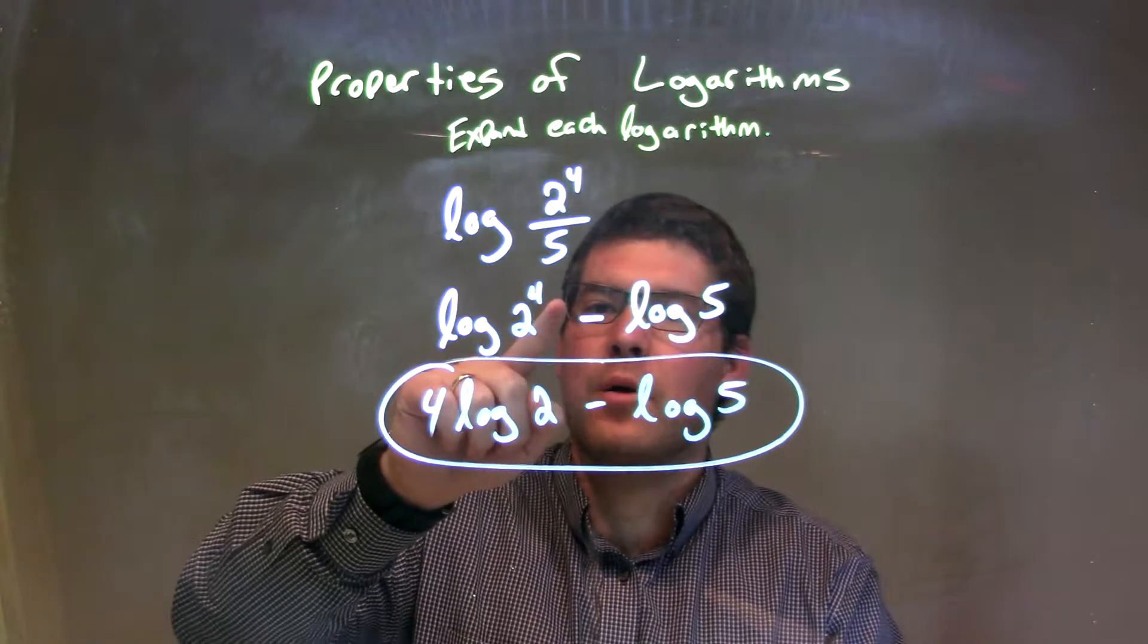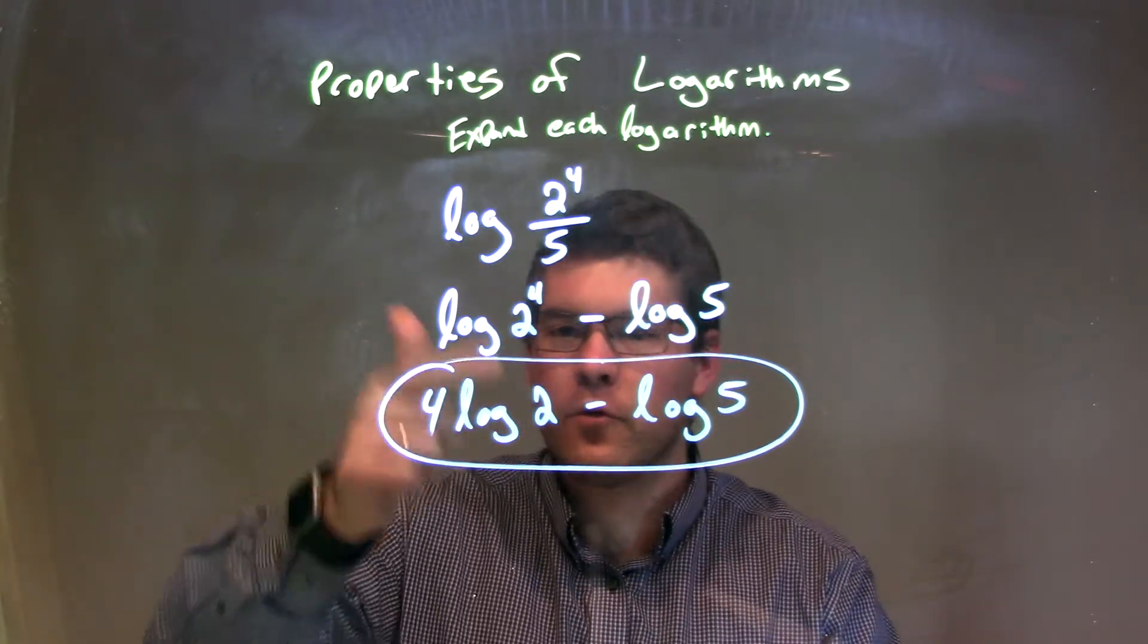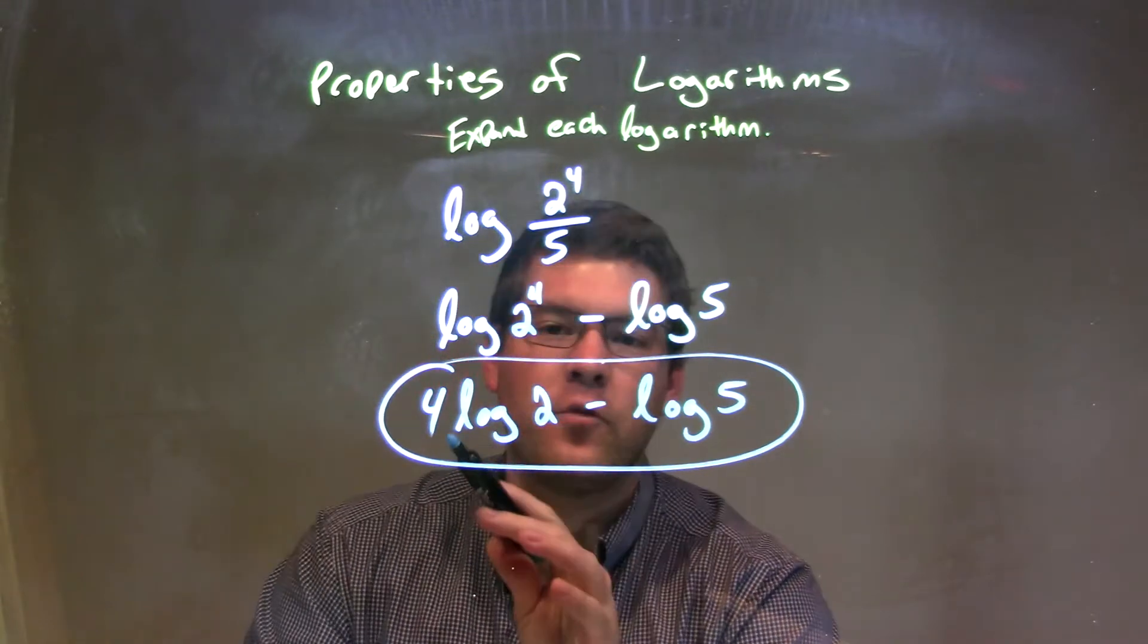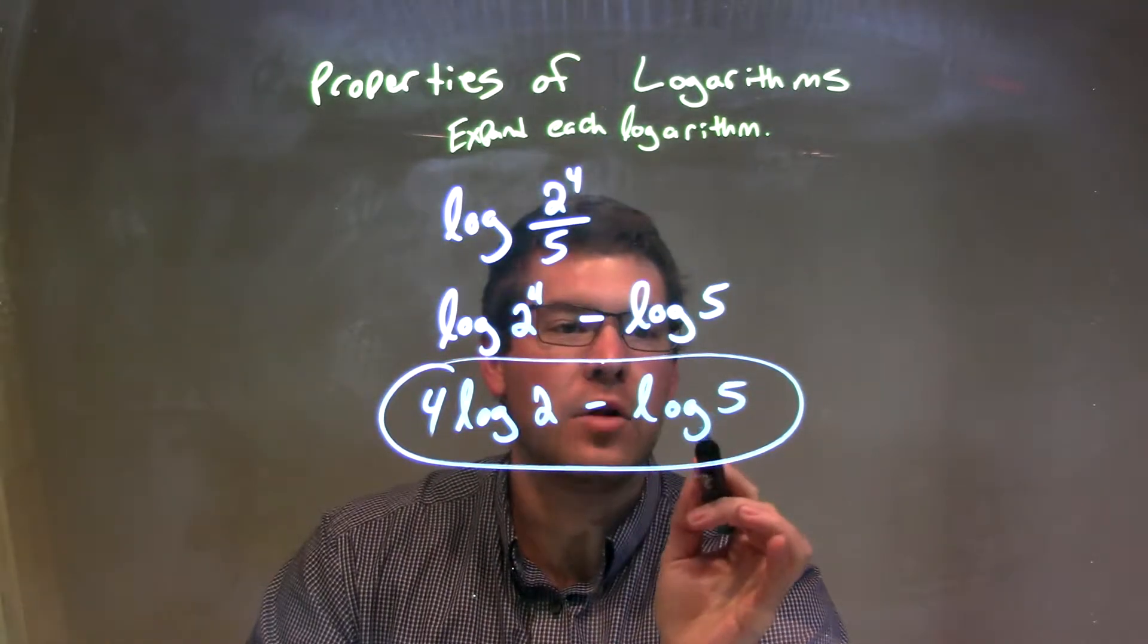Then we have that exponent, that 4th power, come down out front of the log, giving my final answer of 4 log 2 minus log 5.